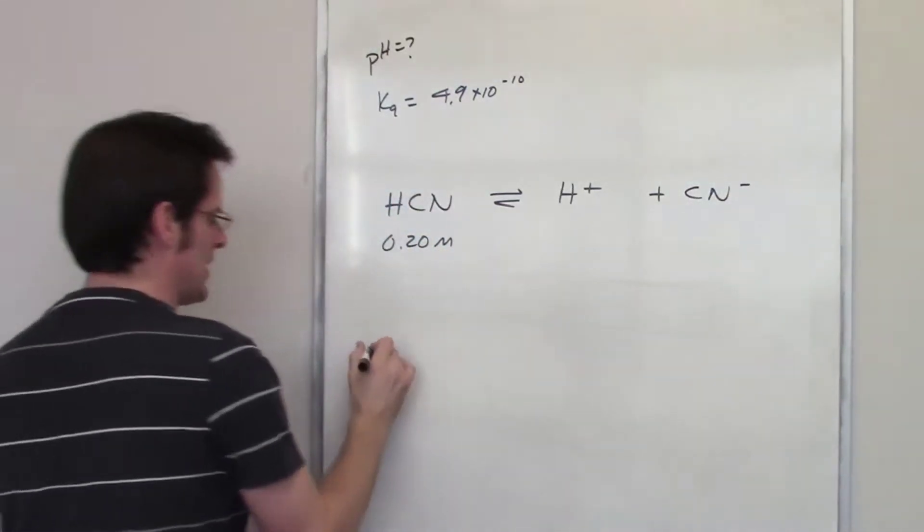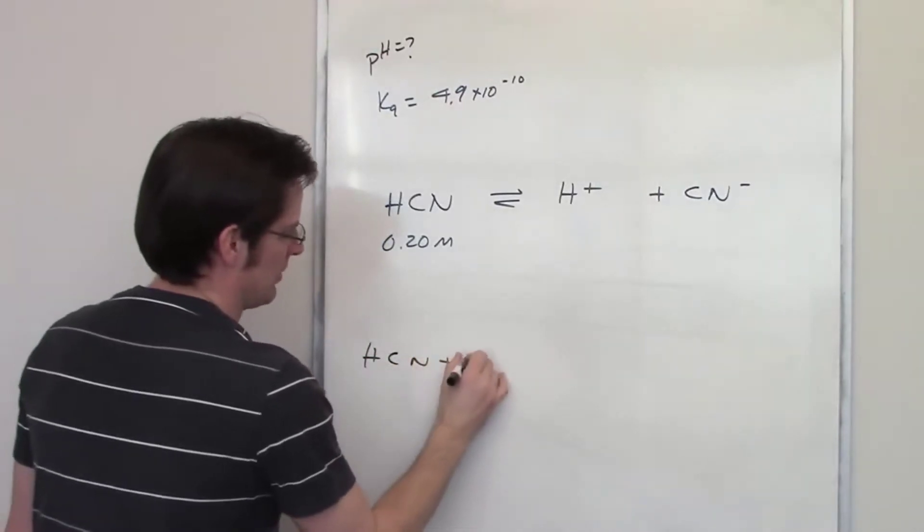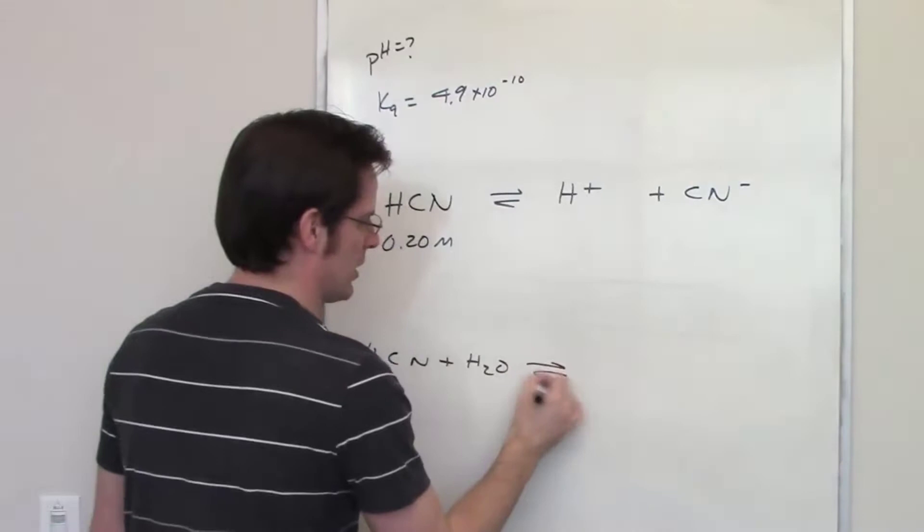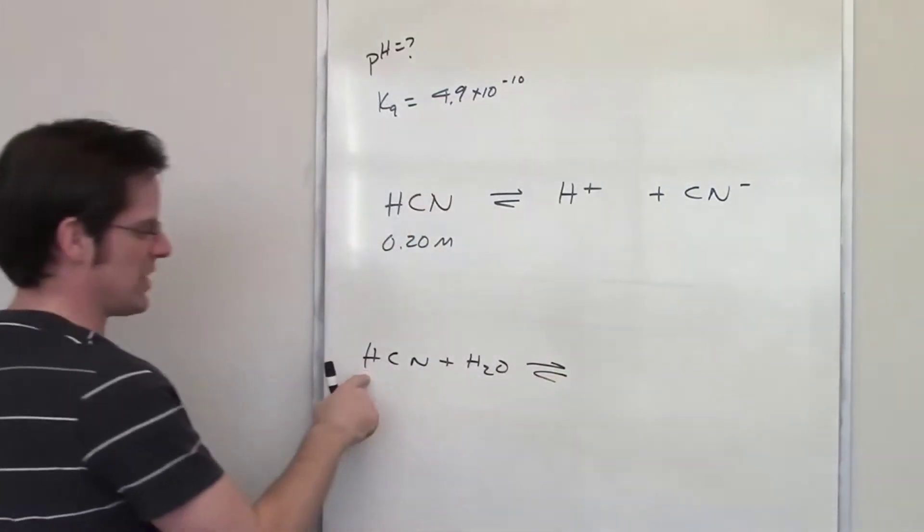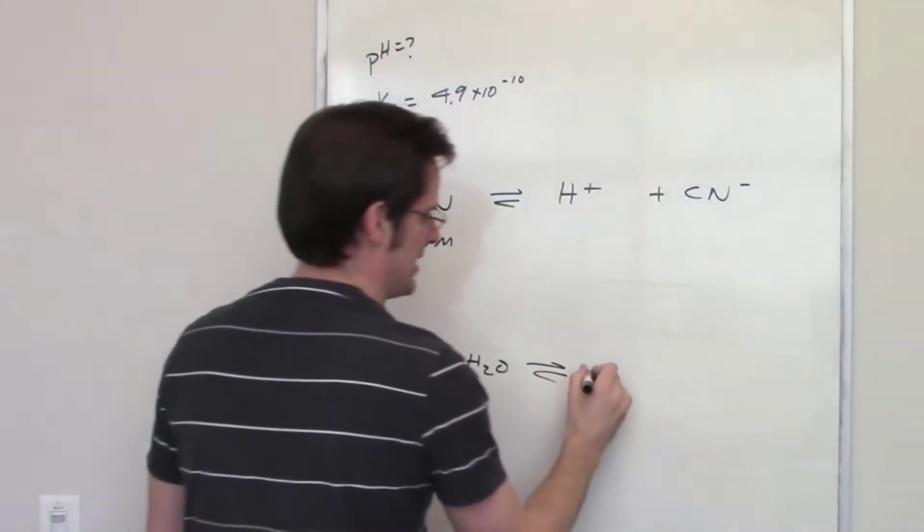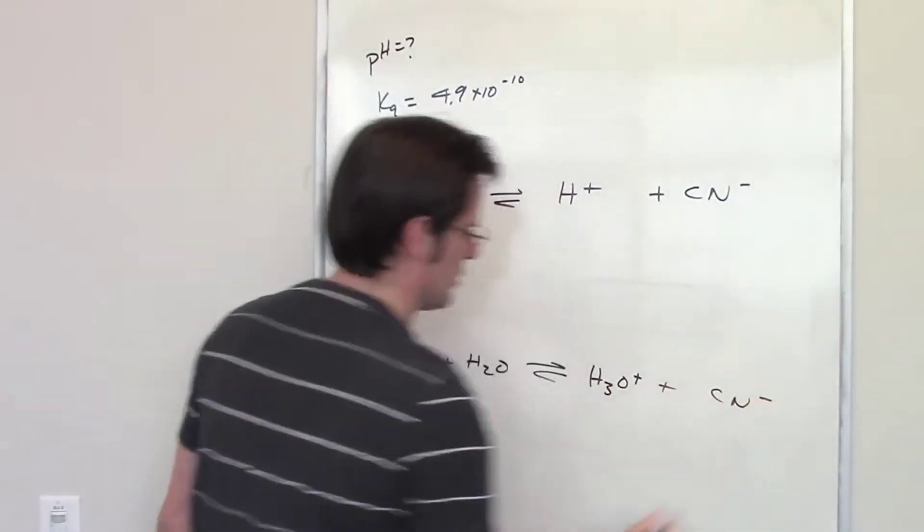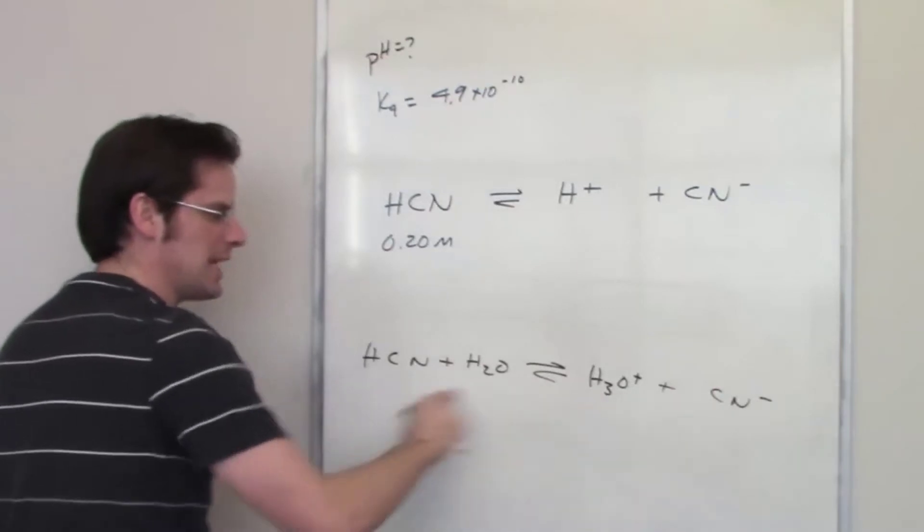Now just in case you guys care I'm going to throw this at you. HCN in aqueous environment actually interacts with water in an equilibrium setting. When this hydrogen dissociates to release H plus, it actually protonates that water to form H3O plus and gives my CN minus just like that. This is what is actually happening.